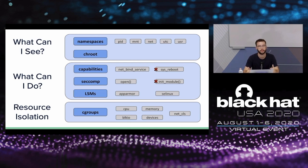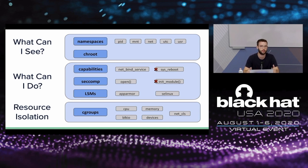Then you have primitives related to what a container can do, like capabilities and seccomp. Capabilities are basically privileges in Linux — you wouldn't want the container to have the sysreboot capability, as that would allow it to shut down the machine. Finally, control groups or cgroups tie it all together — they're about resource isolation and limiting the container's access to host resources. For example, you wouldn't want the container to be able to exhaust the entire host memory and launch a denial-of-service attack against the host.